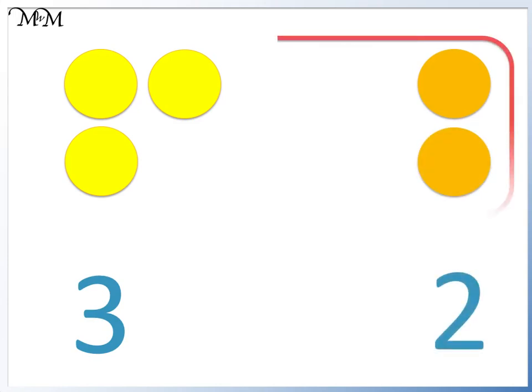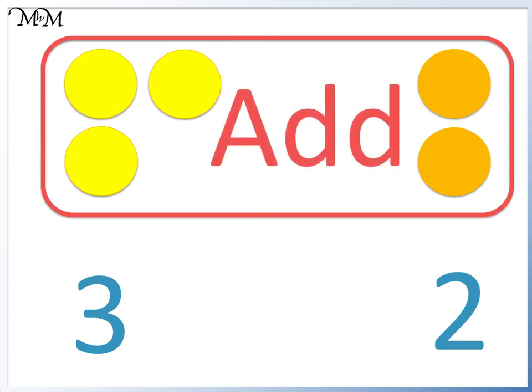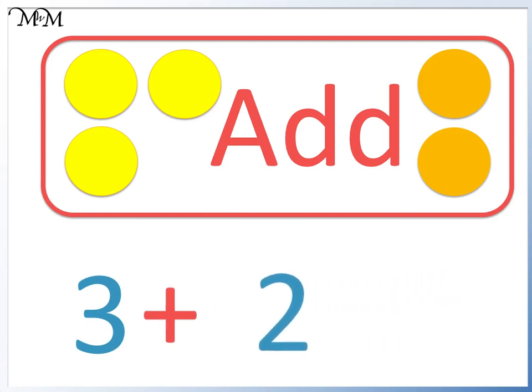We will see how many counters we have all together. The word for combining these counters into a total is adding. We will add these counters. We write this plus sign between the numbers to show that we want to add them. We say three, add, two.